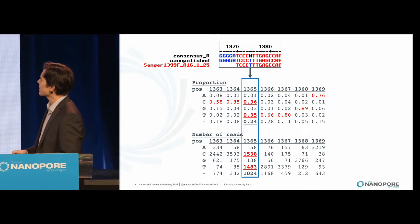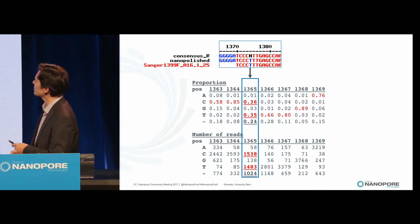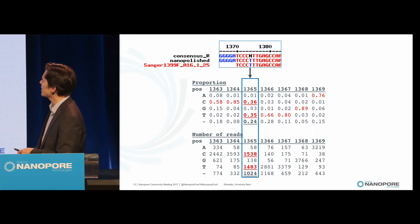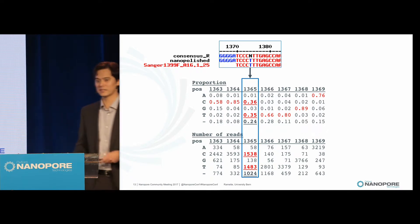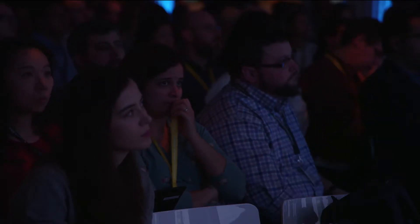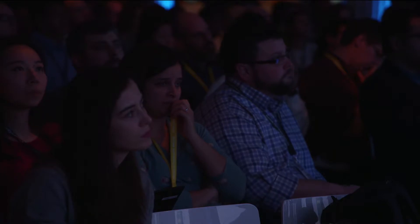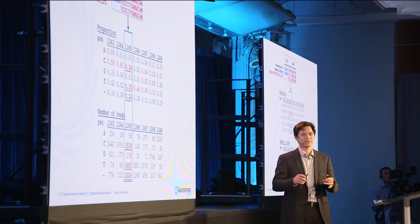If you look closer, here on the top the consensus from the BAM file gives an N — so you couldn't call it. Nanopolish gives a T (thymidine), and Sanger gives a T. But if you look at the composition, you see about 36–35% of C and T, so it's a mixed case. What was not found was in fact because we have a mixture — we're talking about variants and not just errors. So we are reaching the point where biology starts to make sense.